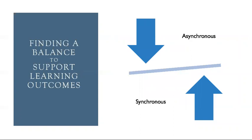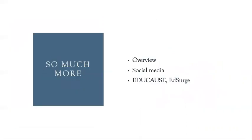In short, online teaching and learning is all about finding a balance between synchronous and asynchronous methods based on student and faculty needs, learning outcomes, and technical and ethical considerations. There is no one-size-fits-all approach. This presentation just covers some of the highlights of the many things you should consider when trying to decide when to use asynchronous and synchronous teaching and learning strategies. A quick review of social media outlets like Twitter or LinkedIn, articles in EDUCAUSE Review or ED search, and even a Google search of asynchronous versus synchronous learning will yield plenty of results that give you a much deeper picture. I encourage you to continue your exploration of the topic.